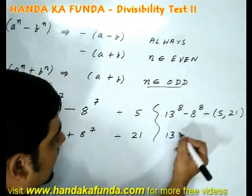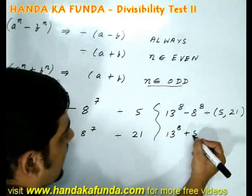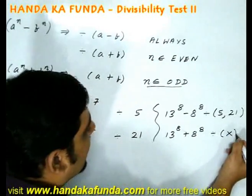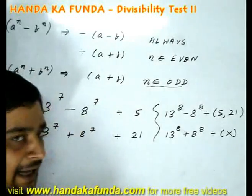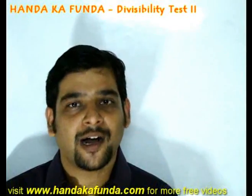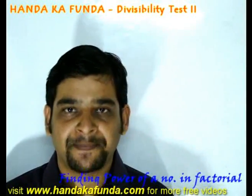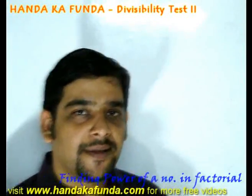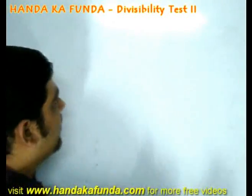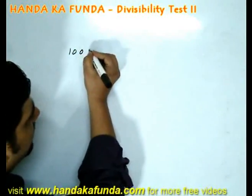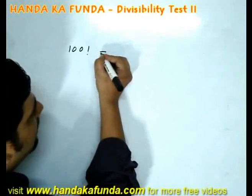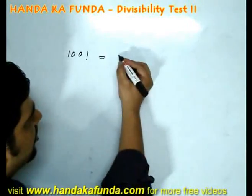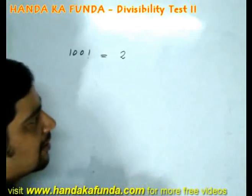13 to the power 8 plus 8 to the power 8 will not be divisible by anything specific. Now let's look at how to find the highest power of a particular number in a factorial. Say we are given 100 factorial — what is the highest power of 2 which divides 100 factorial?